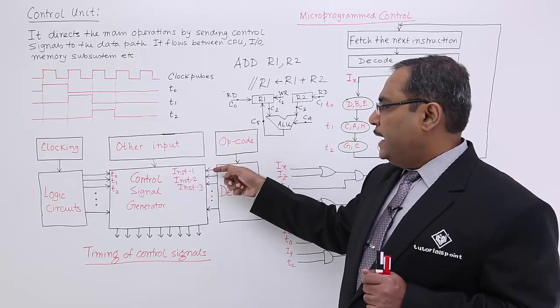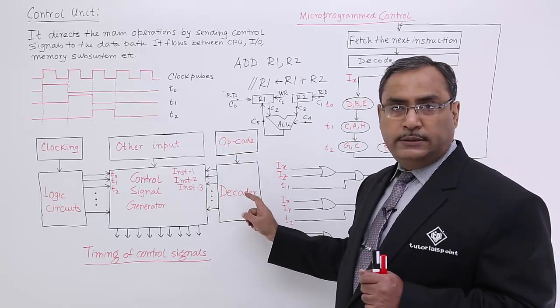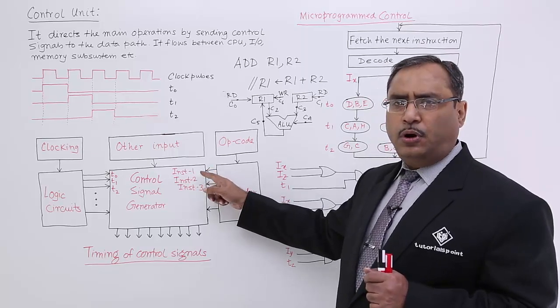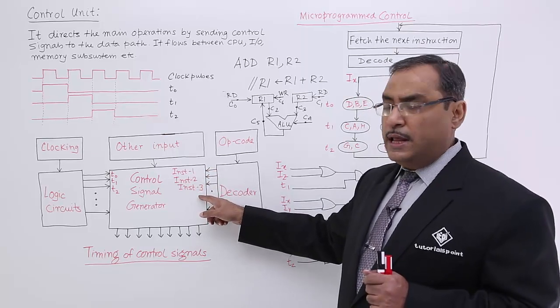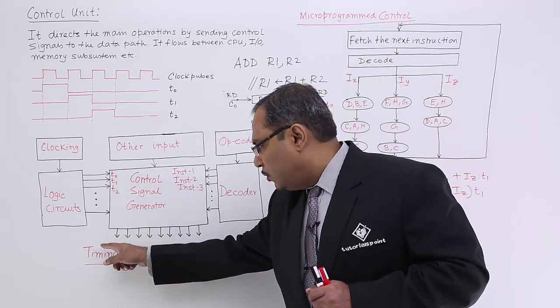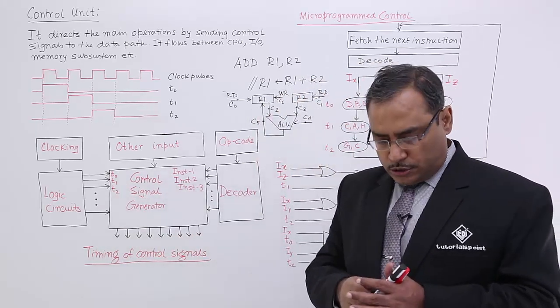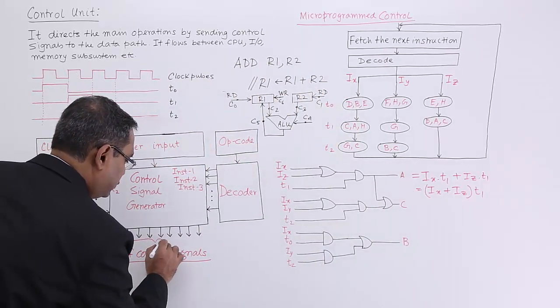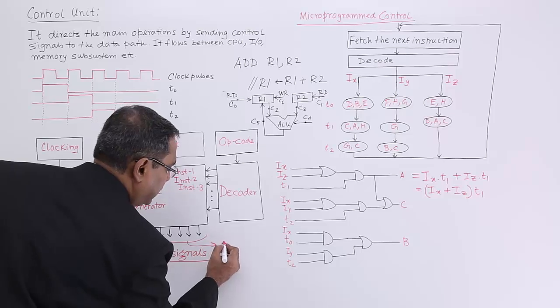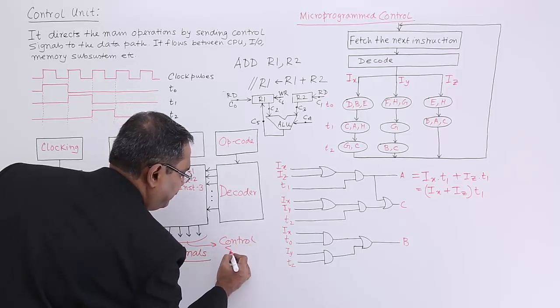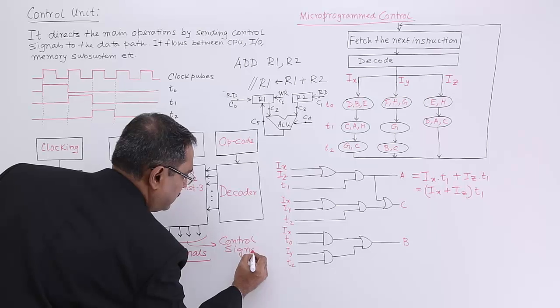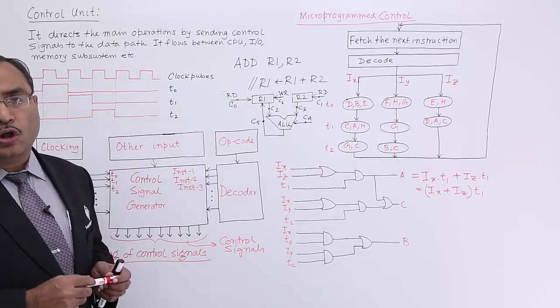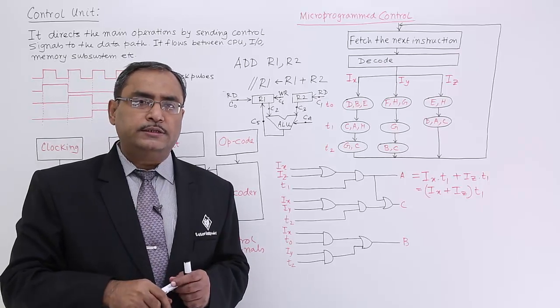Depending upon the opcode any one of the outputs will get selected by the decoder. Let it be instruction 1 or say instruction 2 or say instruction 3 and so on. Depending upon that the control signals will get generated. They are nothing but the control signals. I think you have got the logic here how these control signals are getting generated.